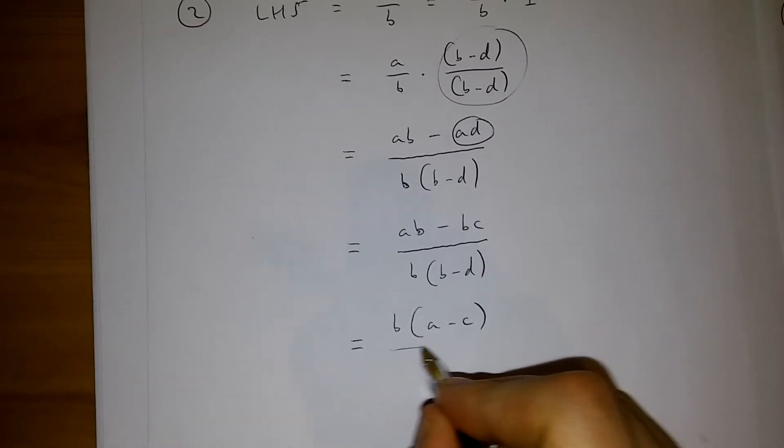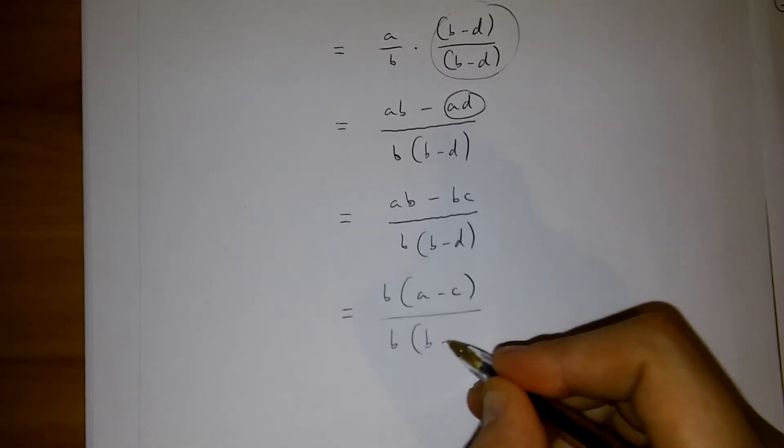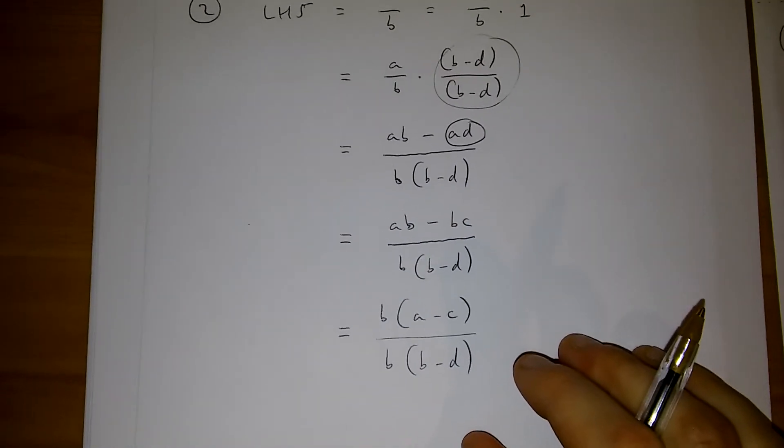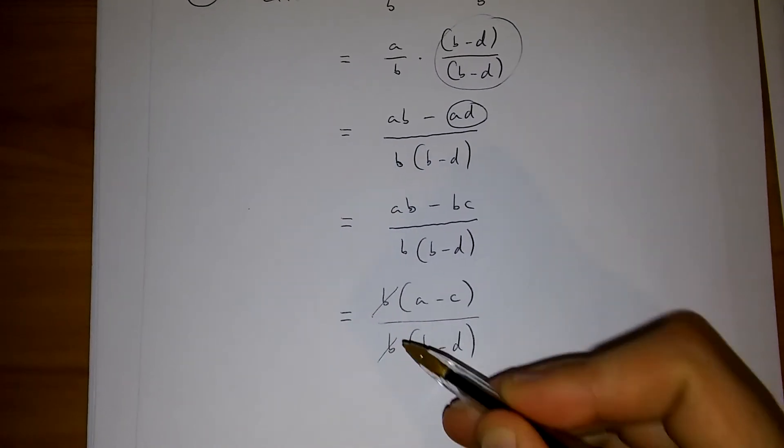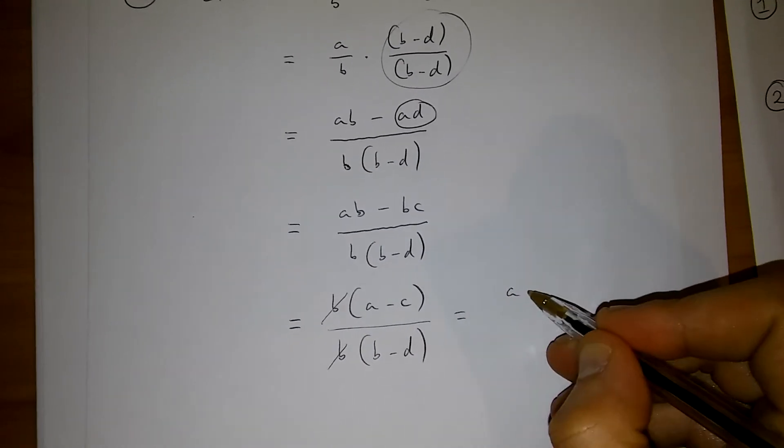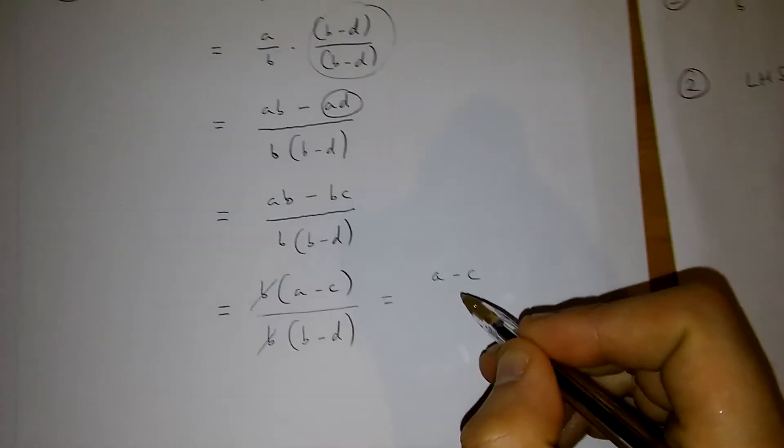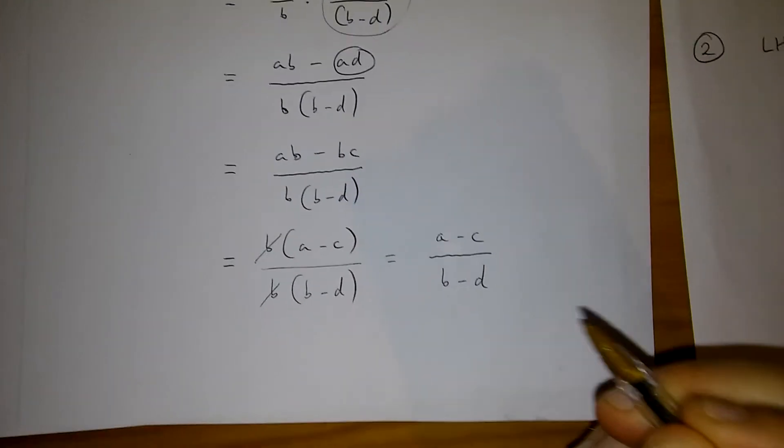over b multiplied by b minus d in brackets. Because we've got b up here and b down here on this fraction, what we end up with is a minus c over b minus d.